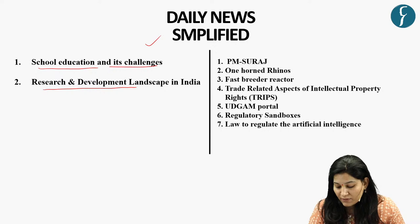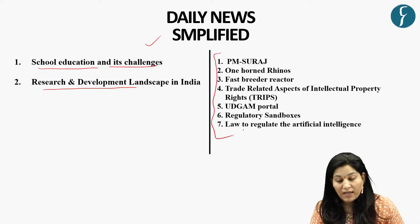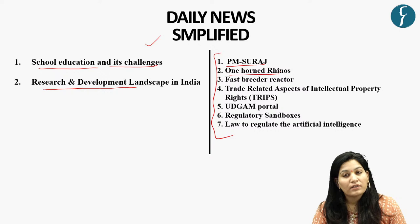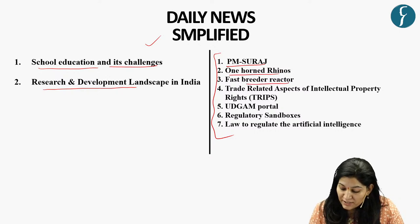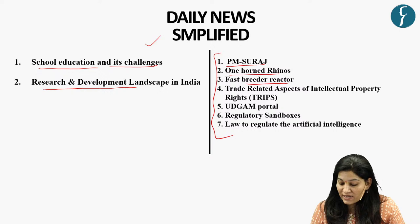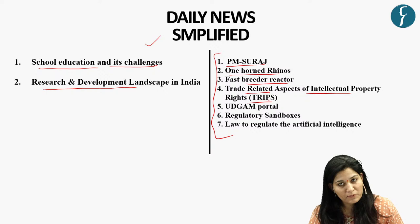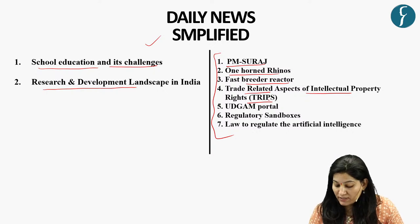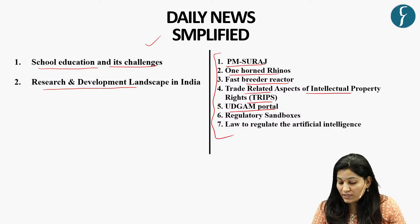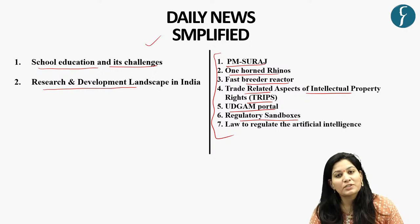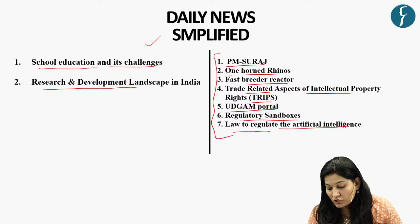For prelims, we have taken up seven important topics: PM Suraj, one-horned rhinoceros, fast breeder reactor, trade-related aspects of intellectual property rights (TRIPS), Udgam portal, regulatory sandboxes, and a question on the law to regulate artificial intelligence.